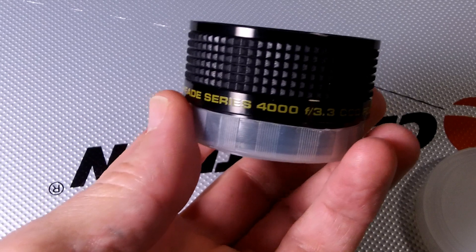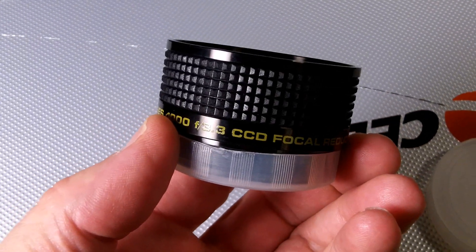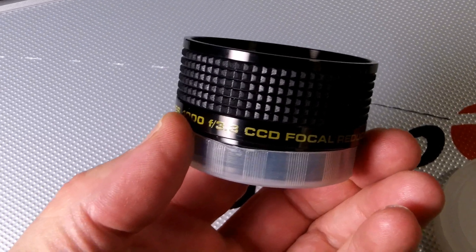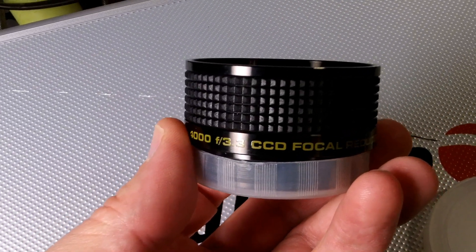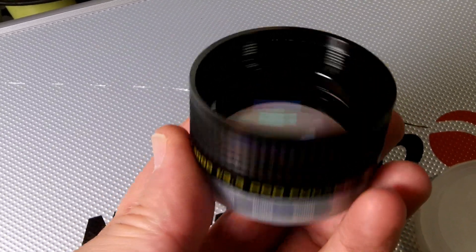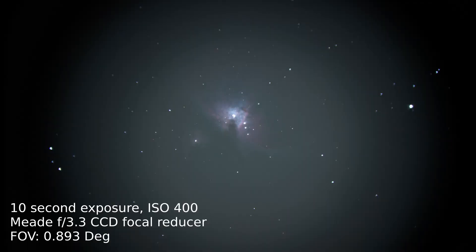So apparently the Meade Deep Sky Imaging CCD camera has a very small pixel size and a very small imaging sensor size. Because when I used this with my crop format A6300 Sony camera, there was an area in the middle that worked very nicely, and then there was a lot of vignetting.